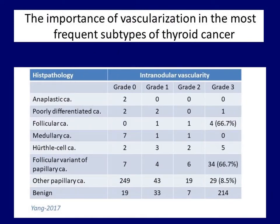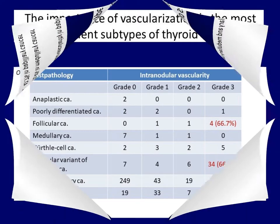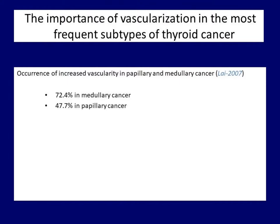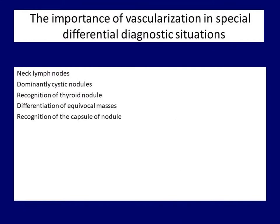The various subtypes of thyroid cancers differ in their vascularization. While two-thirds of follicular cancers and the follicular variant of papillary cancers present with a high degree of intranodular vascularity, this ratio is less than 10% in conventional type papillary cancers. Another study found a higher ratio of intranodular vascularity in papillary cancer, while medullary cancer presented with an even higher occurrence.